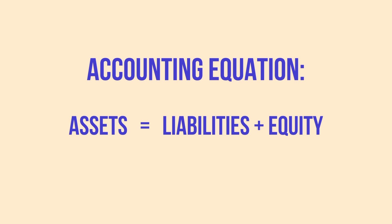Here in the T accounts is where transactions are recorded. Whenever a financial event happens, the total debits and the total credits in the accounts must remain equal. If they are not, you need to check your entries. By using debits and credits, we maintain the balance in the accounting equation: assets equals liabilities plus equity.